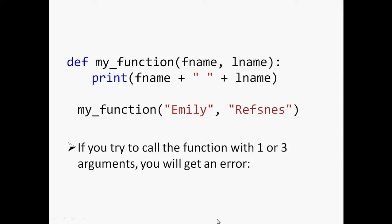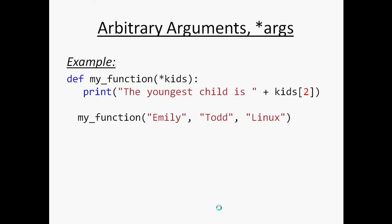If we try to pass other than two arguments, the function will give an error. If you don't know how many arguments will be passed into your function, just add an asterisk before the parameter name in the function definition. In the example, I have defined a function called my_function with a parameter kids, but this time I don't know how many arguments will be passed. So I put the asterisk before the parameter name.